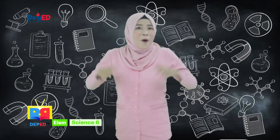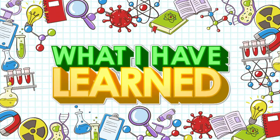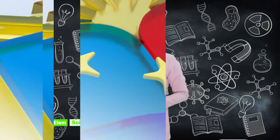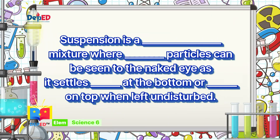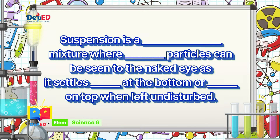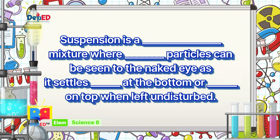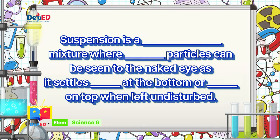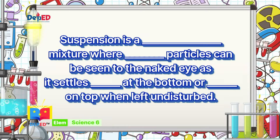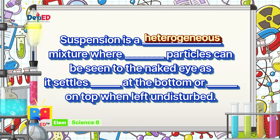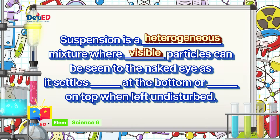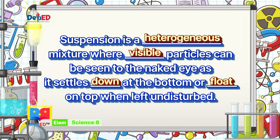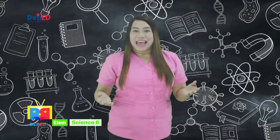Now let's go to What I Have Learned. Complete the statement — do it on your paper. Suspension is a blank mixture, where blank particles can be seen to the naked eye, as it settles blank at the bottom, or blank on top when left undisturbed. The answer: Suspension is a heterogeneous mixture where visible particles can be seen to the naked eye as it settles down at the bottom or floats on top when left undisturbed.